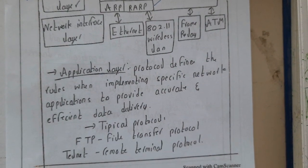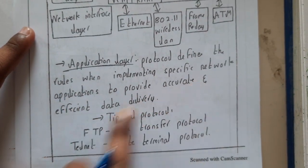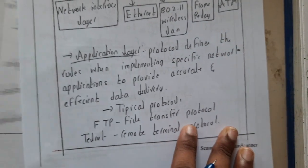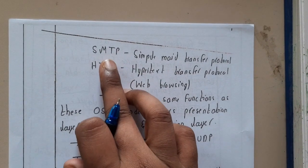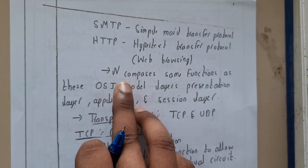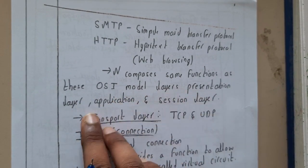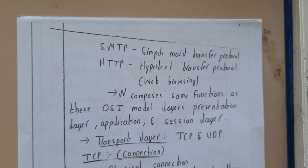Now for the theoretical part: Application layer protocols define the rules when implementing a specific network application to provide accurate and efficient data delivery. A few of them are FTP (File Transfer Protocol), Telnet (remote control — used to connect to and control a remote system), SMTP (Simple Mail Transfer Protocol), and HTTP (Hypertext Transfer Protocol) used for web browsers. This layer encompasses the same functionalities as the OSI model's Application, Presentation, and Session layers.